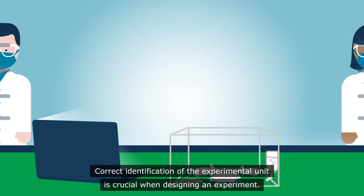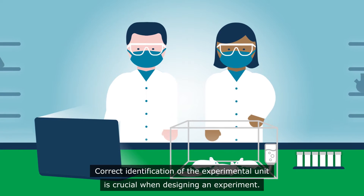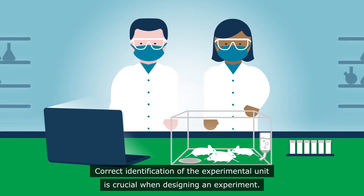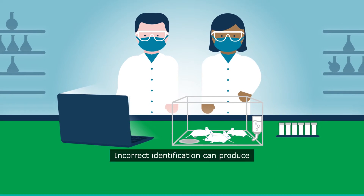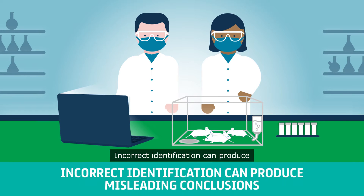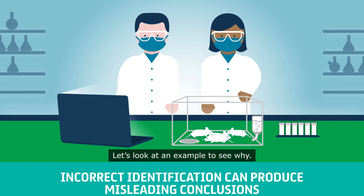Correct identification of the experimental unit is crucial when designing an experiment. Incorrect identification can produce misleading conclusions. Let's look at an example to see why.